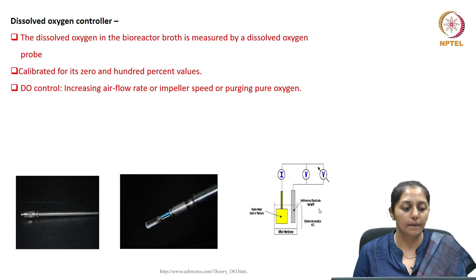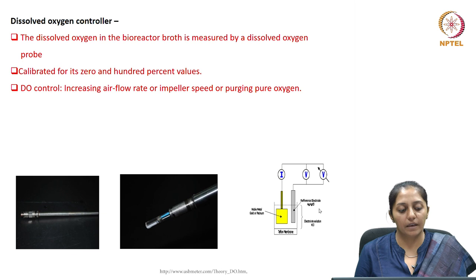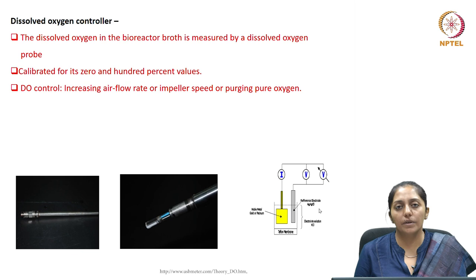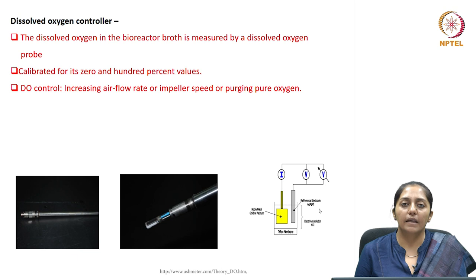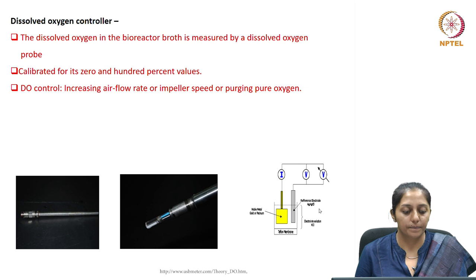The dissolved oxygen in the reactor broth is measured by a dissolved oxygen probe based on galvanic or polarographic electrodes. The polarographic electrode has a membrane at the bottom selectively permeable to oxygen; oxygen gets reduced at the noble metal electrode, causing current flow measured as proportional to the oxygen tension of the broth. For control, the measured signal is compared with the set point, and the error is minimized by increasing the RPM or increasing the air flow rate until the measured value is brought close to the set point.